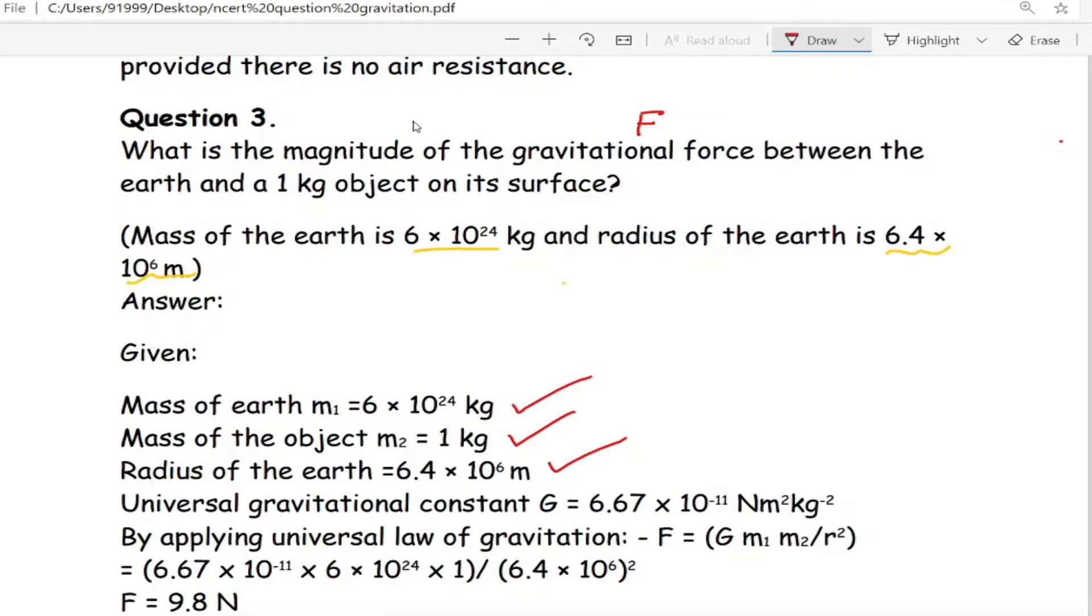Then we know the gravitational constant G = 6.67 × 10⁻¹¹ N·m²·kg⁻². Then by applying universal law of gravitation, we know F = G × m₁ × m₂ / r².